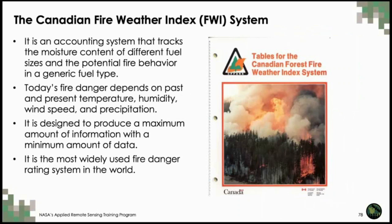The Canadian Fire Weather Index (FWI) system is an intermediate-complexity fire danger rating system that tracks the moisture content of different classes of dead fuels. It requires daily measurements of surface temperature, relative humidity, wind speed, and precipitation, and is designed to produce a maximum amount of information from a minimum amount of data. Because of its modest data requirements and adaptability, it is the most widely used fire danger rating system in the world, having been adopted and calibrated for local fire environments from the boreal forests of Alaska to the dry forests of southern Europe to the tropical forests of Fiji.